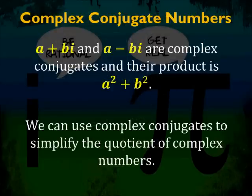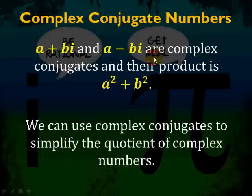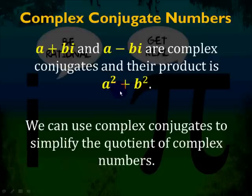Complex conjugate numbers: just like with radicals, complex numbers have conjugates. Since you cannot have an i in the denominator of a fraction, you need to eliminate it. a plus bi and a minus bi are complex conjugates, and their product is always a squared plus b squared. When you multiply complex conjugates together, you get rid of the i and end up with a squared plus b squared — it's still a difference of squares, but because of i squared you get a sum instead.